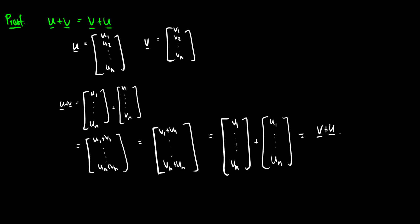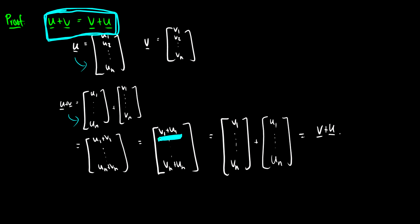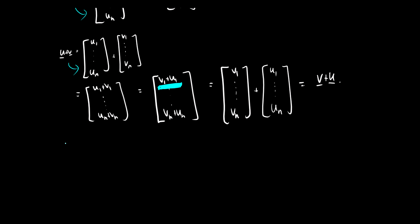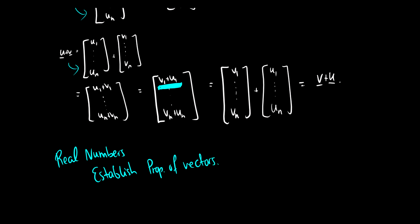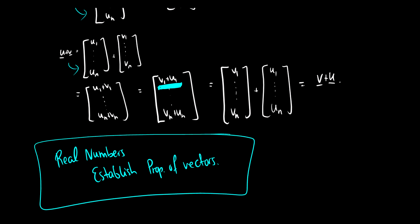So that is a proof that u plus v equals v plus u. You might ask why we have to do all this. Well, vectors are not real numbers — they have a magnitude and a direction. We've defined how we write our vectors and how we can add them, and using the commutative properties of real numbers we've established a commutative property of vectors. We can't just assume these properties are true, but now we have a proof.